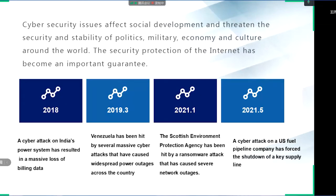The application of the internet has changed the social form and people's lives. When enjoying the convenience of the internet, people are also taking the risk of privacy leakage. Cybersecurity issues affect social development and threaten the security and stability of politics, military, economy and culture around the world. The security protection of the internet has become an important guarantee. The following are the most famous cyber security incidents in the world in recent years, and all sorts of incidents show that the problem of network security has reached a point that cannot be ignored.